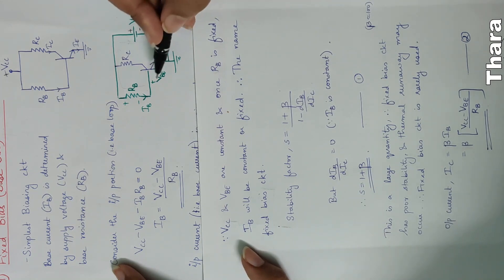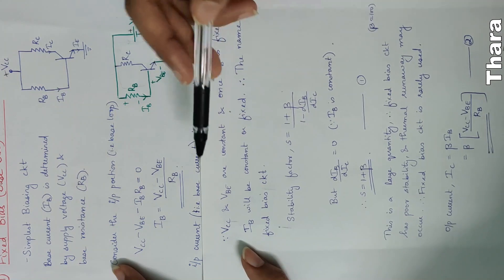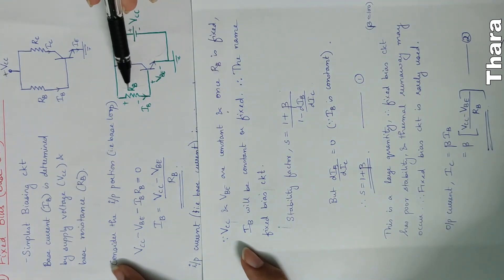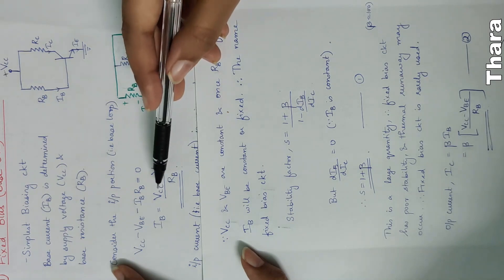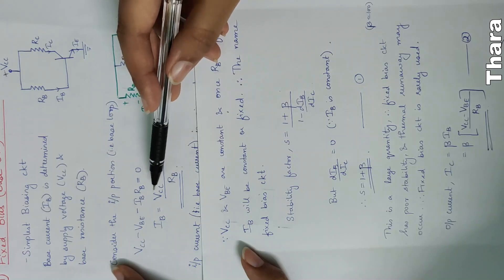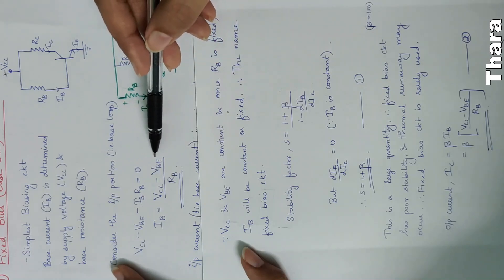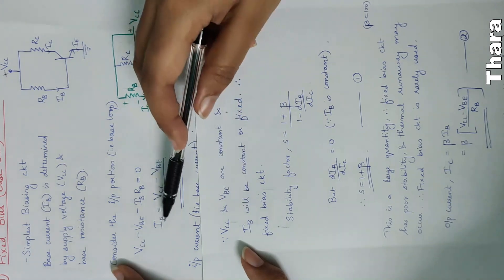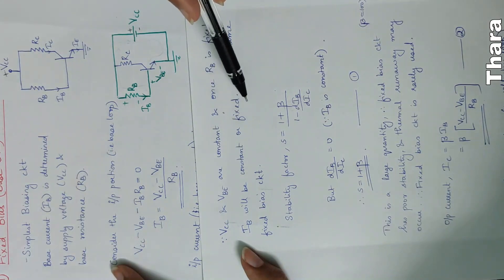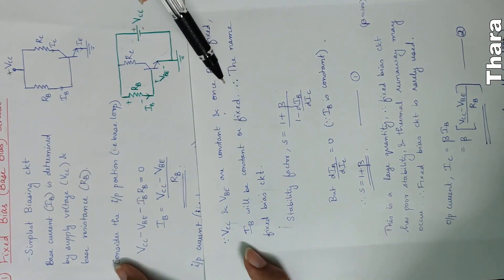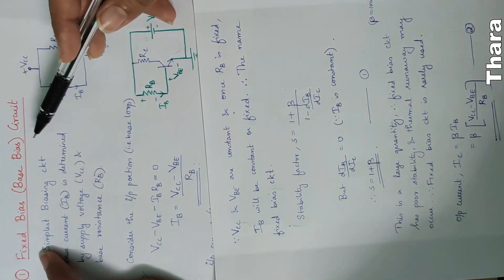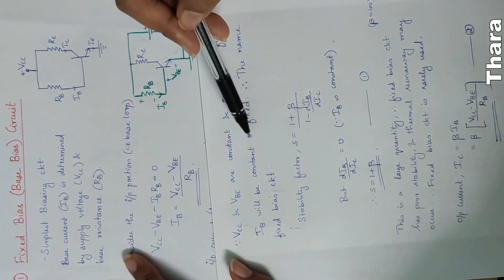Supply voltage VCC is constant, VBE is constant, and once RB is fixed you have a fixed resistance — that is constant. In the IB equation, VCC, VBE, and RB are all constant, so IB will be constant or fixed. That is why we call this circuit a fixed bias circuit, because IB is fixed and constant.